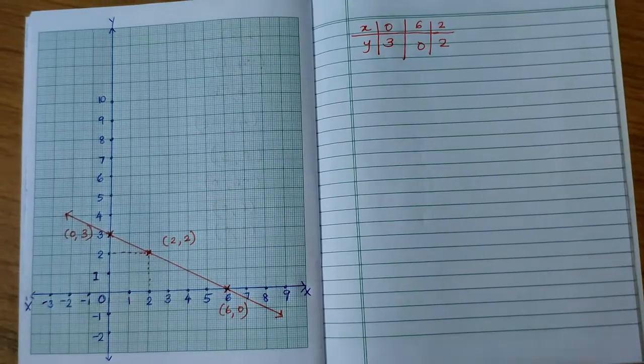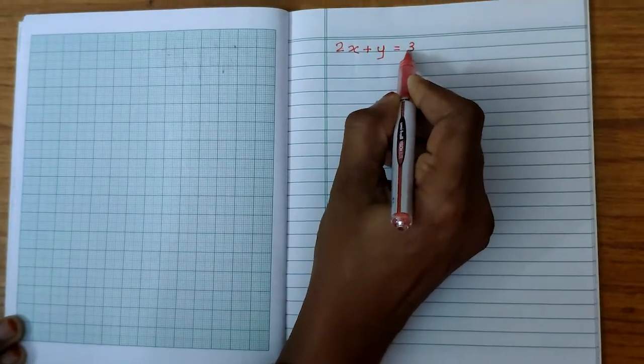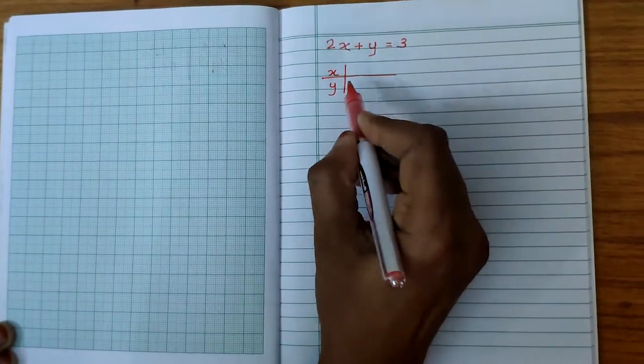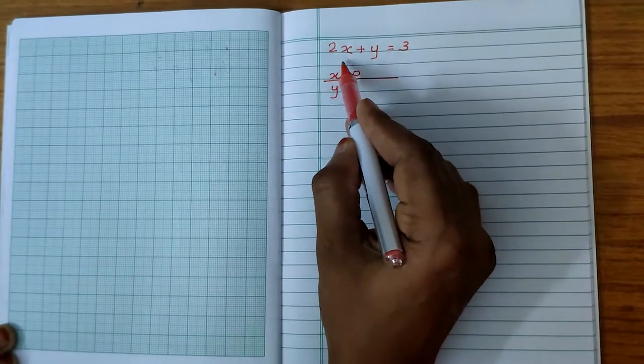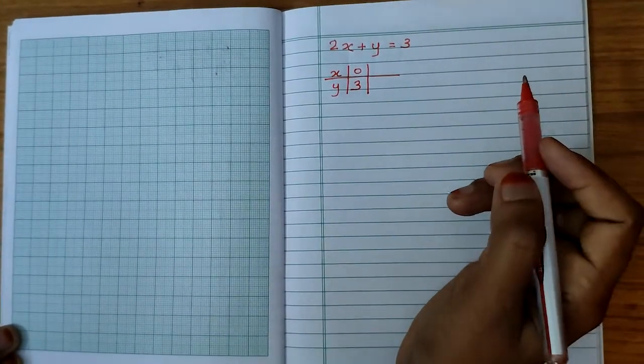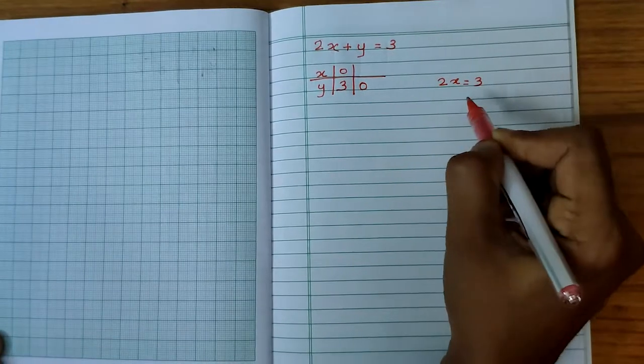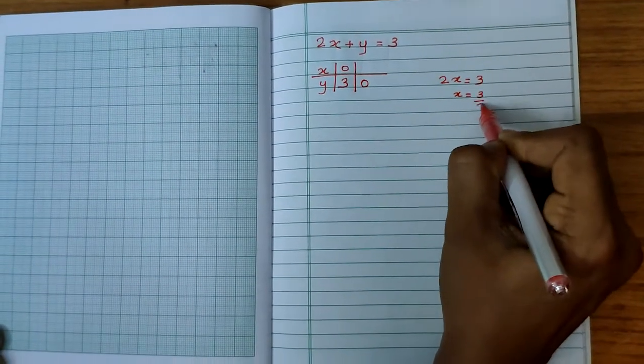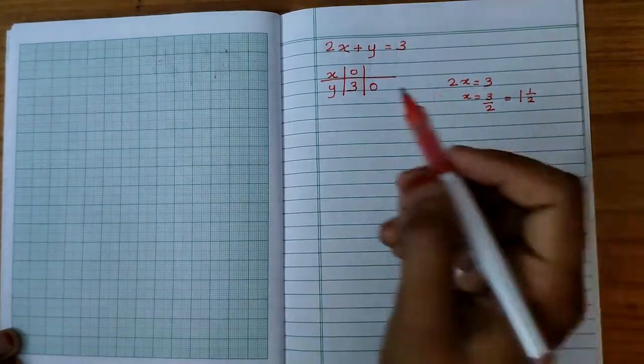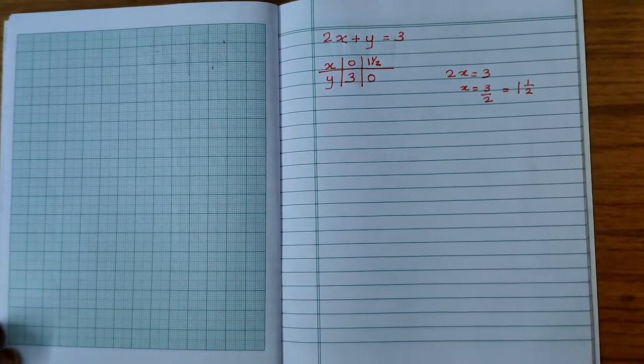I will show one more example. 2x plus y equals 3. Here I am going to substitute the value of x as 0. That means this 2x term will be 0 or y equals 3. So (0, 3) is the first solution. Next I am going to substitute the value of y as 0, then 2x will be 3 or x is 3 by 2. 3 by 2 means we can rewrite it as 1 and a half. The value of x is 1.5 or y is 0. And I told two solutions are enough to draw the graph.